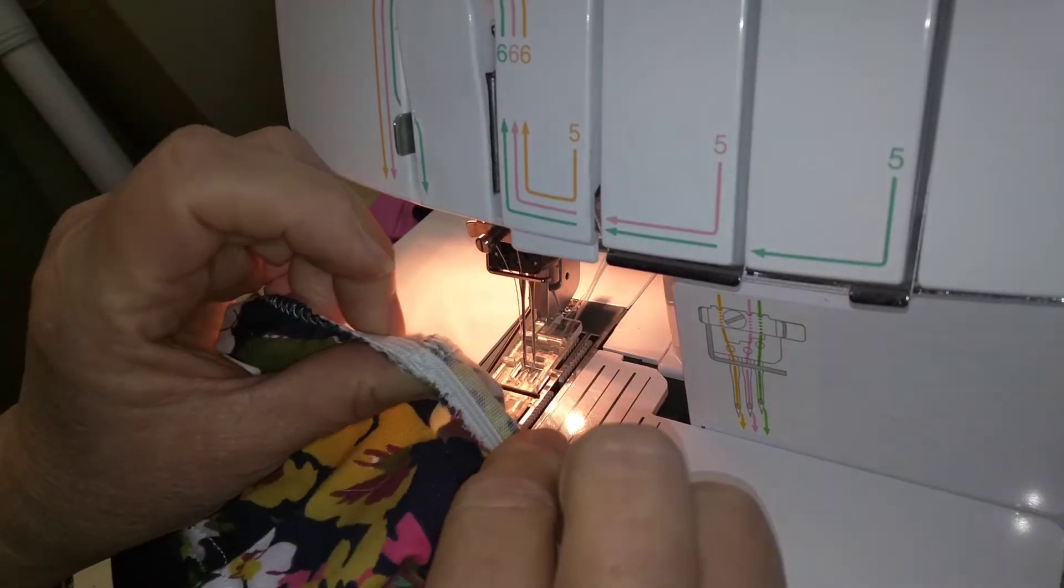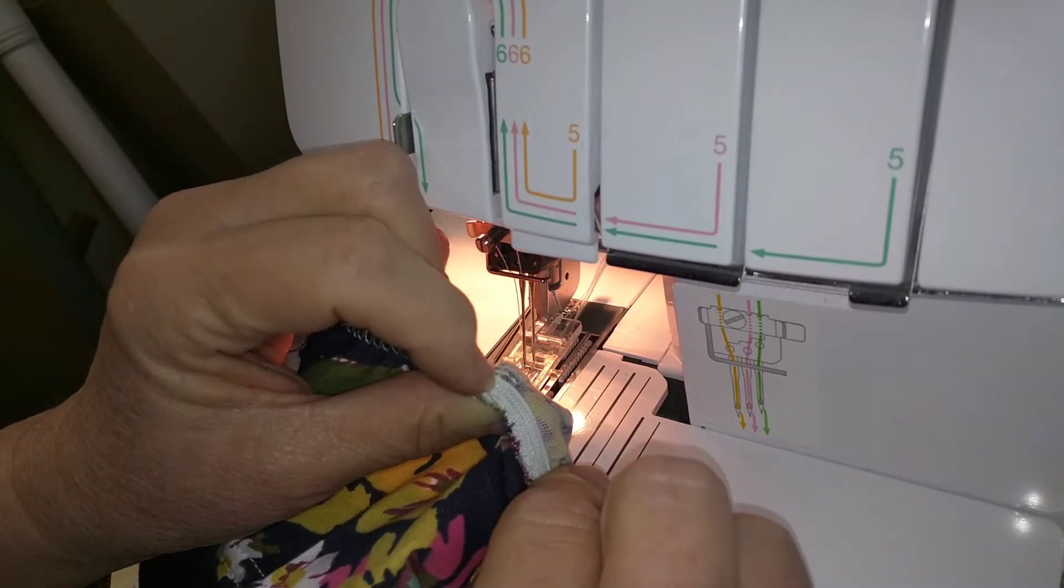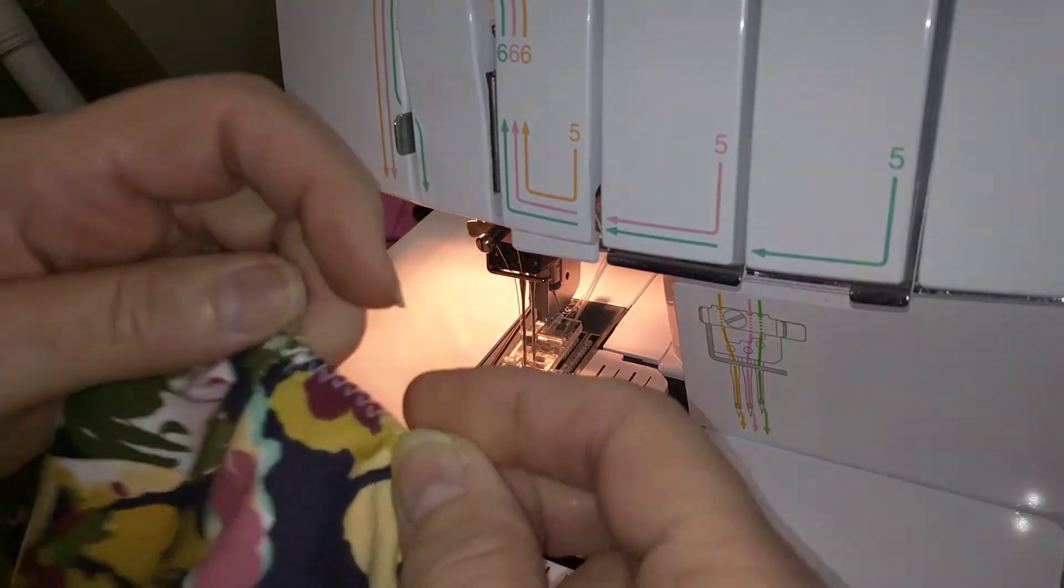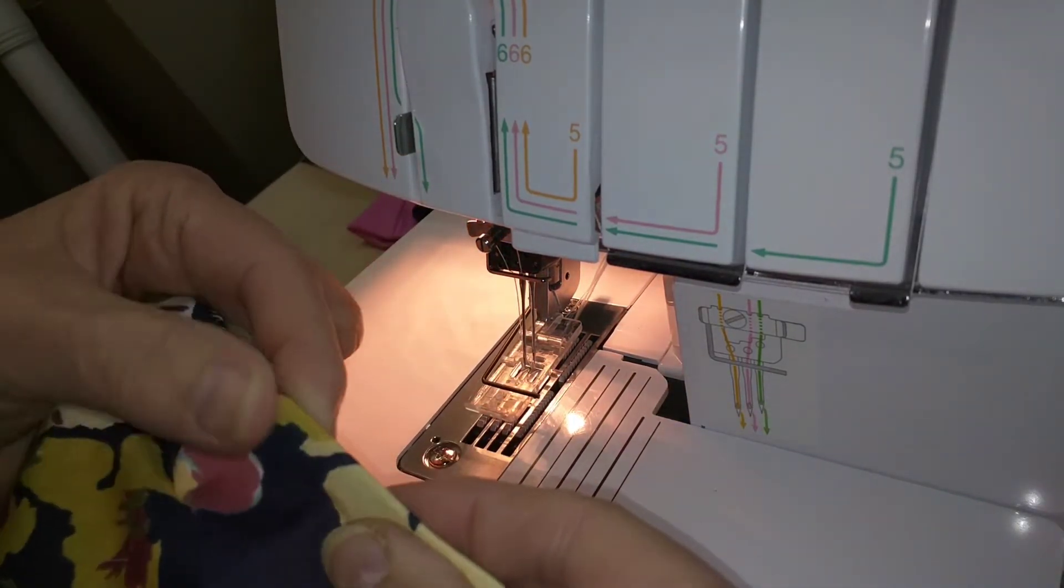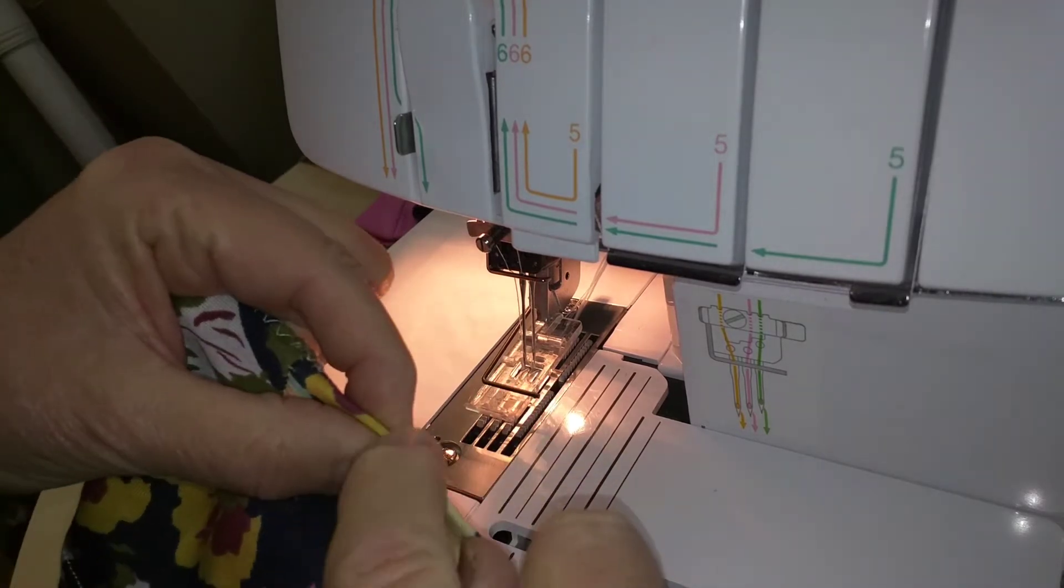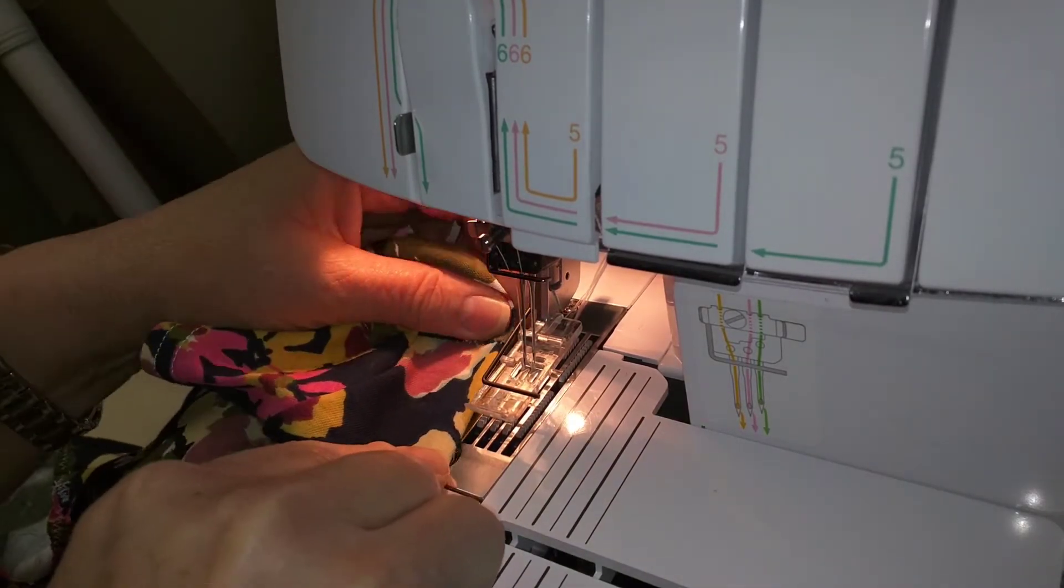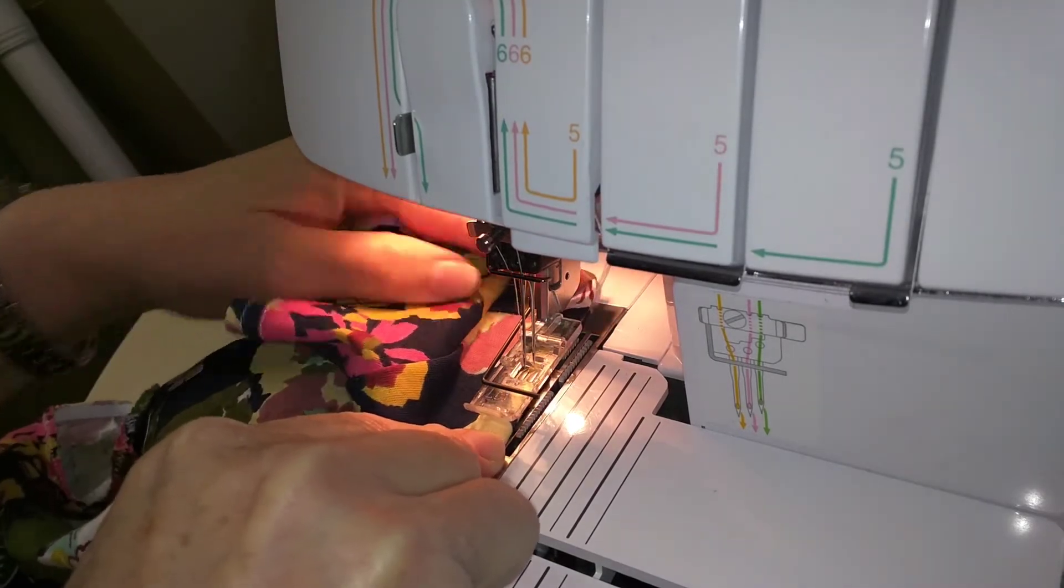I usually start where I ended the elastic here. So what I'm going to do is turn it over and get it just taut on this end right here. And then I don't start right on the seam, I start a little below it.